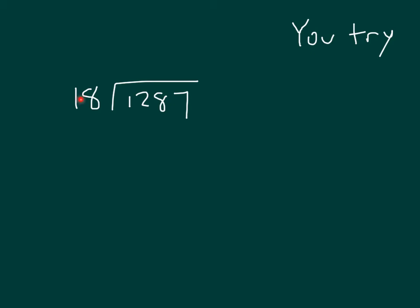That 18 cannot go into that 1,000 there. It cannot go into the 1,200s. It can go into the 128 tens. It goes in 7 whole times. Be careful where it is that you place that 7. 7 times 18, that's 56, regroup of 5, gives us 126.